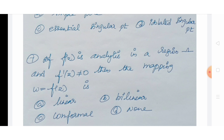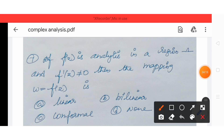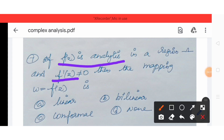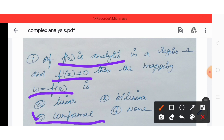When f(z) is analytic and f'(z) ≠ 0, the mapping is called conformal. Option C is the correct answer.